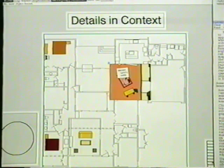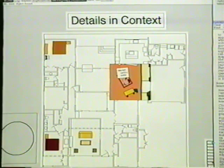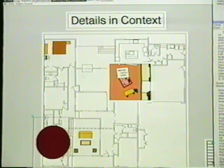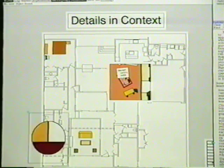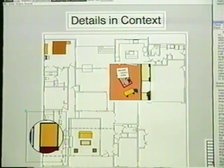To move the Time magazine from the kitchen table to the nightstand in the bedroom, we can use two different magnifying lenses, one over the dining room table and a second over the nightstand. We then simply select the magazine and drag it from one place to the other.